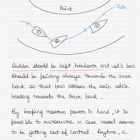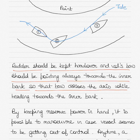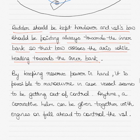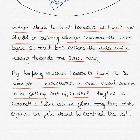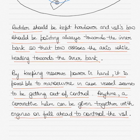The rudder should be kept hard over and the vessel's bow should always be pointing towards the inner bank, so that the bow crosses the axis while heading towards the inner bank. By keeping reserve power in hand, it is possible to maneuver if the vessel seems to be getting out of control — a corrective action can be given together with engines on full ahead to regain control.